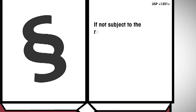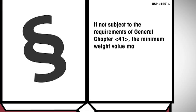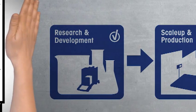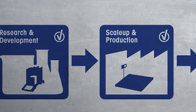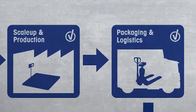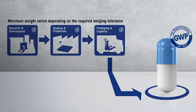It is important to note that USP now also gives recommendations on how to establish the minimum weight for applications outside of USP 41. If not subject to the requirements of General Chapter 41, the minimum weight value may vary depending on the required weighing tolerance and the specific use of the balance. This provides useful guidance to ensure accurate measurements of weighing equipment in other parts of the pharmaceutical process chain as well, guaranteeing consistently good product quality.